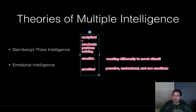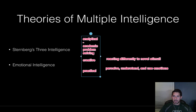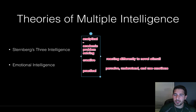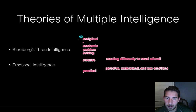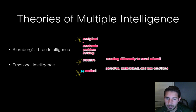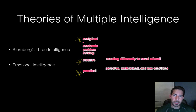You need to know these three: analytical, creative, and practical — put some stars next to those. You should also know the eight types of intelligence from Gardner, as those are often tested. Sternberg's three intelligences are important to know for this part.